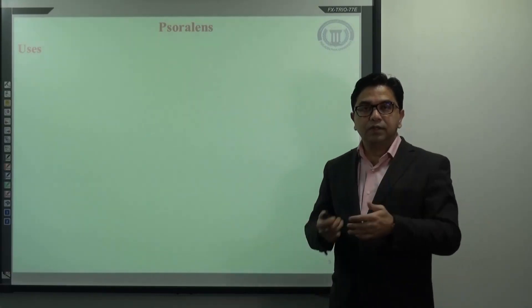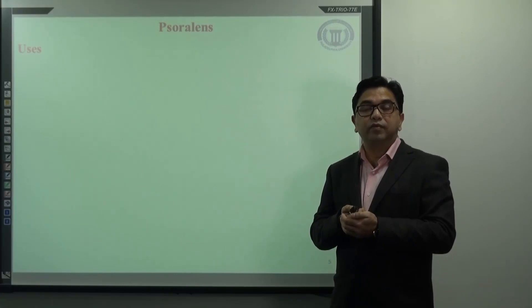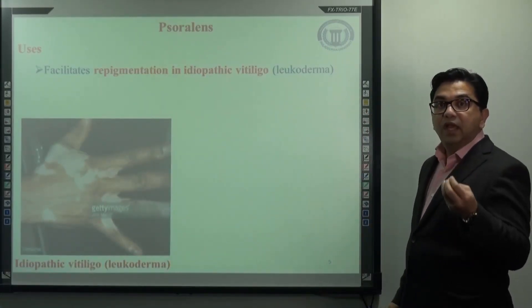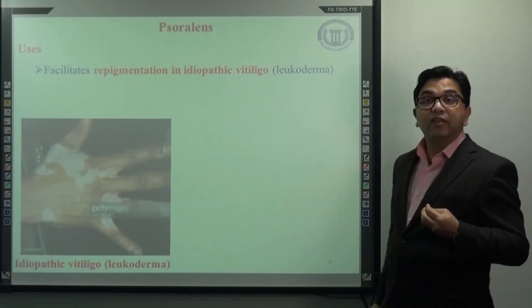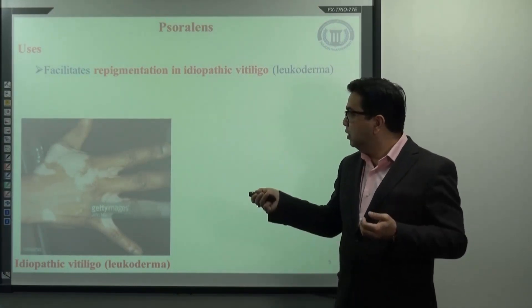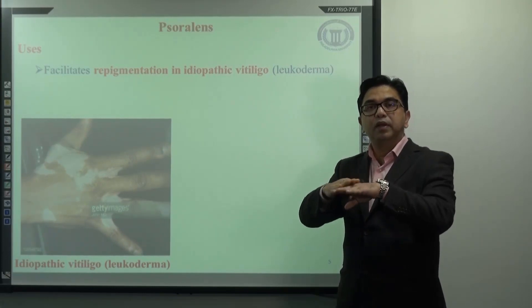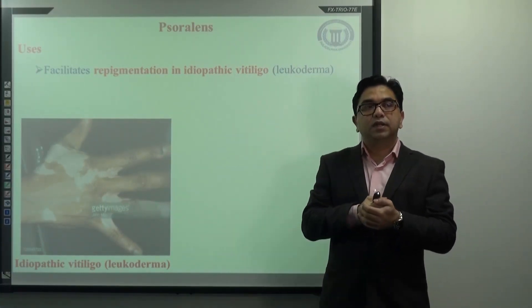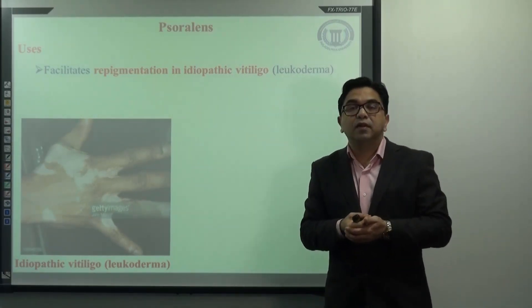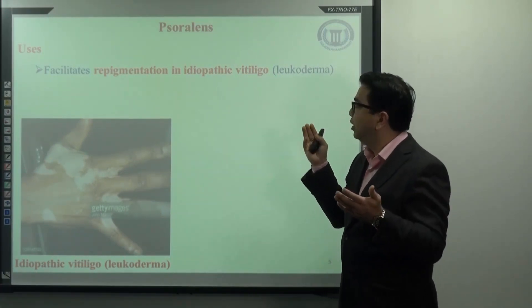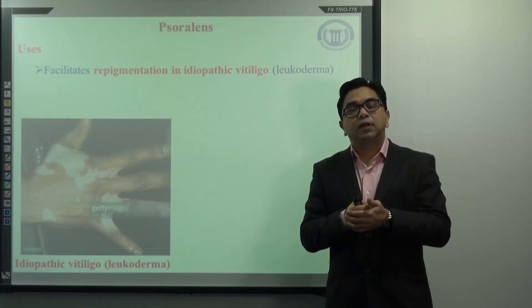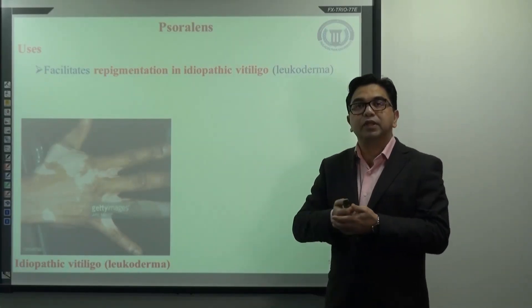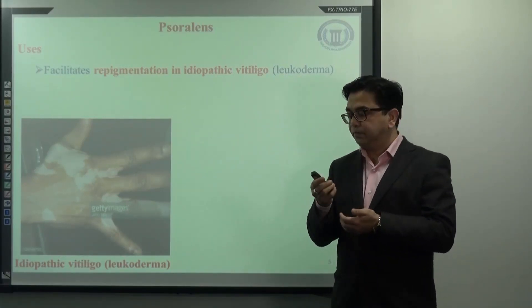Regarding the uses of psoralen, we will see why psoralen is considered one of the most important medicinal coumarins. It is able to facilitate repigmentation in idiopathic vitiligo, which is also known as leukoderma. Looking at the picture of leukoderma, you can see people have white patches and lack of pigment in their body. As a pharmacist, you should know that even though various treatments are available for idiopathic vitiligo or leukoderma, they are not so successful, and in most cases, people live their whole life without proper treatment.